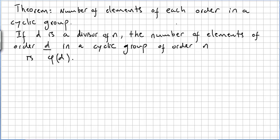Theorem: Number of elements of each order in a cyclic group. If D is a divisor of N, the number of elements of order D in a cyclic group of order N is the function φ(D) — the Euler phi function. This is a very important function in number theory with a lot of applications, and I will talk about this in other videos.